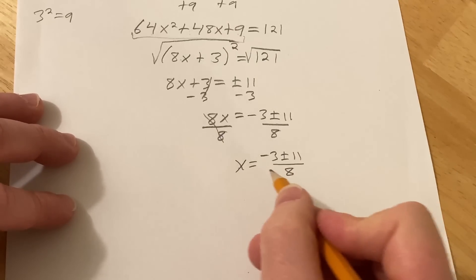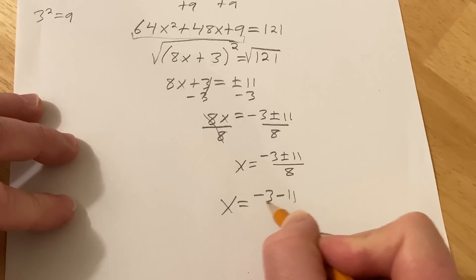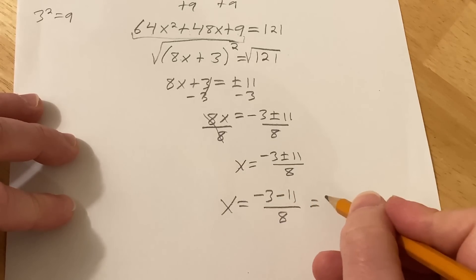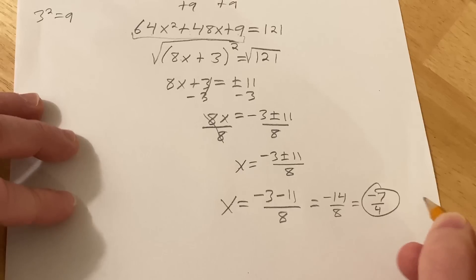So then we have negative 3 plus or minus 11 over 8. So now you have two cases. Let's do the minus case first. So minus 11 over 8. So minus 3 minus 11 is minus 14 over 8. Divide by 2. You get negative 7 fourths. That's one of the answers.